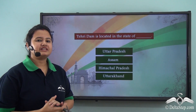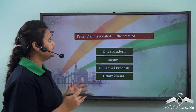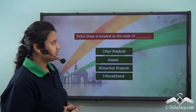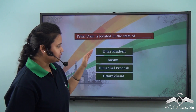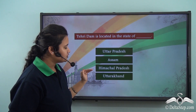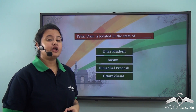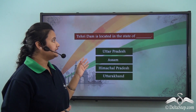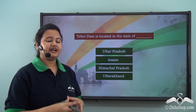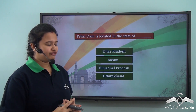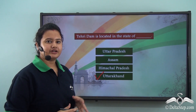Now let us answer this objective: Tehri Dam is located in the state of — the options are Uttar Pradesh, Assam, Himachal Pradesh, or Uttarakhand. As we just read, Tehri Dam, which is the tallest dam of India, is located in the state of Uttarakhand. So the correct option is Uttarakhand.